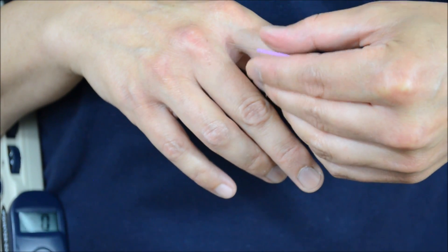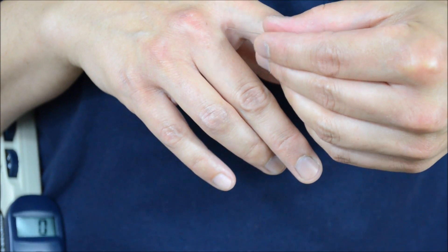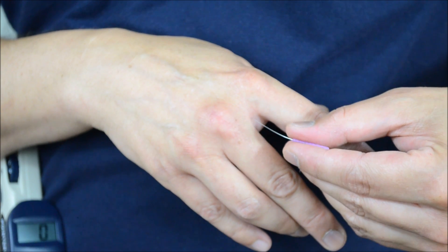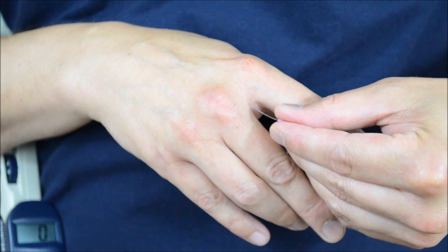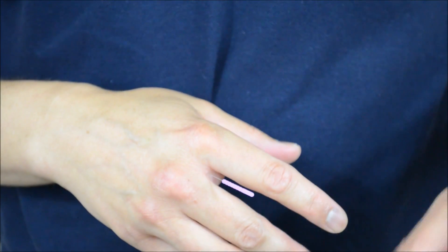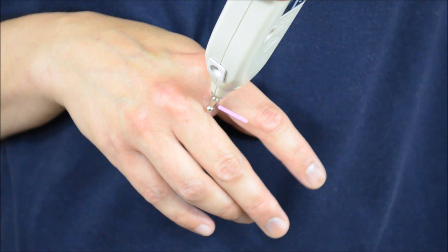Now, if I wanted to change the position to get only the palmar interossei, I'm going to bring this more towards the index finger. Again, backing it up just a tad. I'm going to bow that needle towards the index finger. And same thing, if I stimulate it, if we're in the palmar interossei, I should only see the index finger moving.